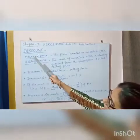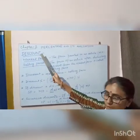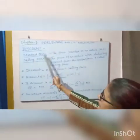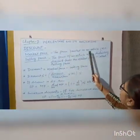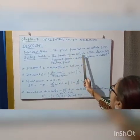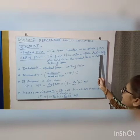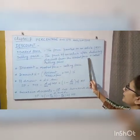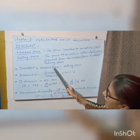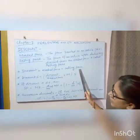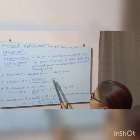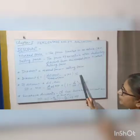In this chapter, we are going to learn about discount. Discount means deduction in price. Marked price: the price printed on an article, MP. Selling price: the price of an article after deducting discount from the mark price is called selling price. Discount equals mark price minus selling price. Discount percentage equals discount by mark price into 100, full bracket percentage.